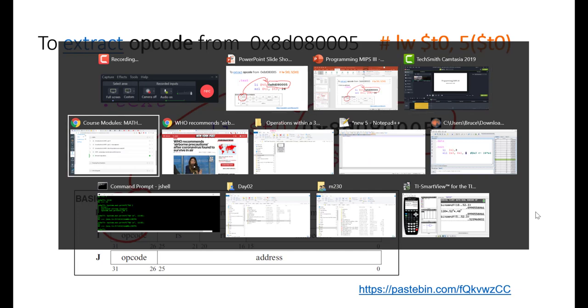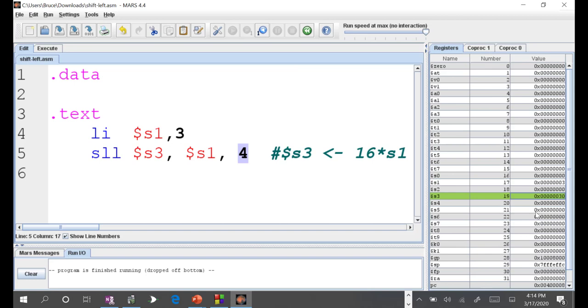In the previous lecture, we started the Mars IDE and we were able to take a 3 and load it into S1, and then shift that 3 four bits to the left using shift left logical. When we shifted it 4 bits to the left, it's the same as multiplying by 2 to the 4.